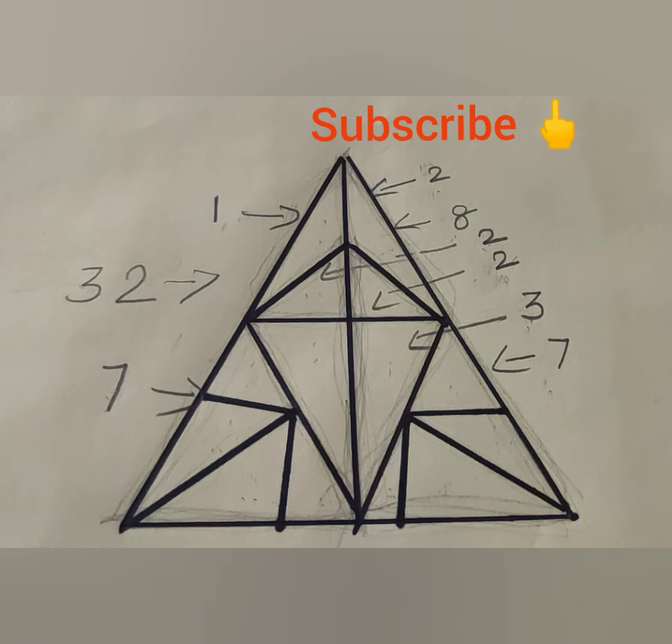If you are able to find all the 32 triangles, really you are a genius one. In the beginning, only 14 or 16 or 17 triangles are visible. If you are able to find 17 triangles also, it's okay.